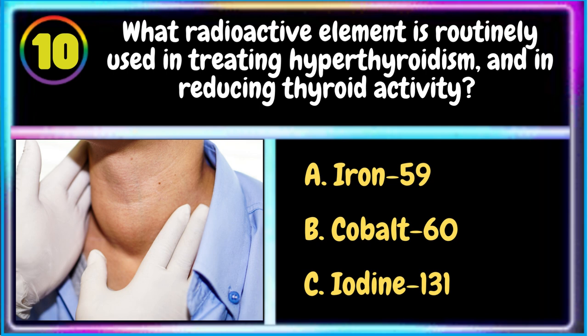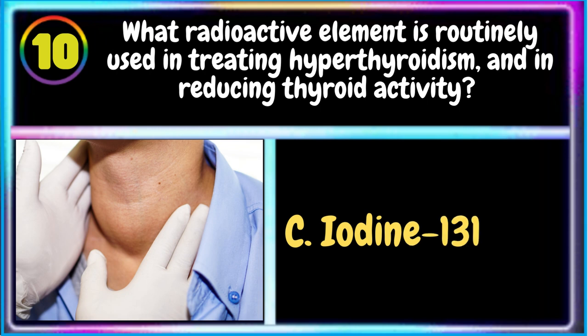10. What radioactive element is routinely used in treating hyperthyroidism and in reducing thyroid activity? A. Iron 59 B. Cobalt 60 C. Iodine 131. The correct answer is C. Iodine 131.